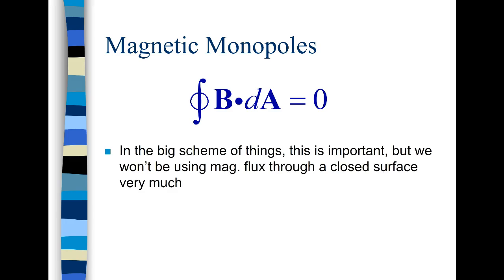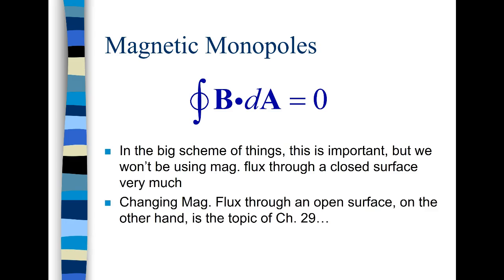Now in the big scheme of things this is very important. It's the second of Maxwell's equations. And it tells us a lot about how magnetic fields behave. But we're really not going to be using magnetic flux through a closed surface very much. We're going to get to it. But we will be talking about magnetic flux through an open surface both later on in this unit and also when the magnetic flux is changing. We'll talk about it in our next unit.